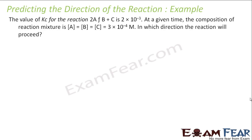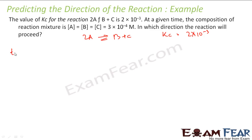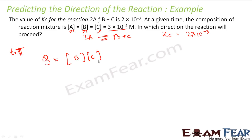Let's take an example. The value of Kc for the reaction 2A ⇌ B + C is 2 × 10⁻³. At a given time T, the concentration of A, B, and C are all equal to 3 × 10⁻⁴ mol per liter. We need to find the direction of the reaction. So Qc = [B][C] / [A]² at time T.